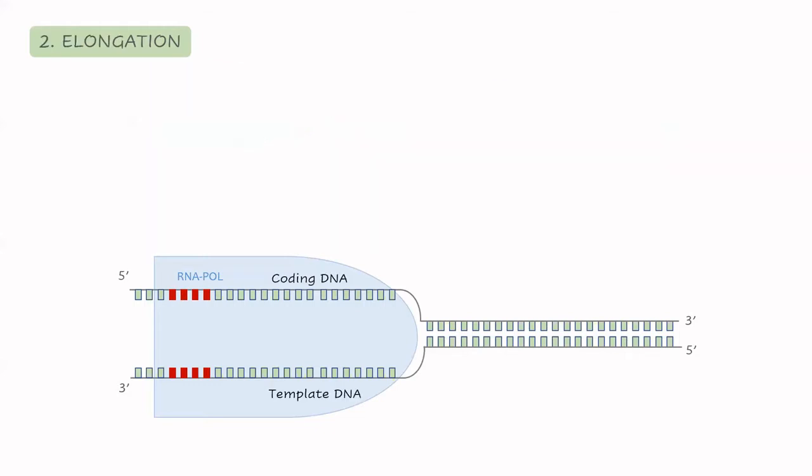Here the elongation phase starts. In the DNA we have two strands. One of them is what we call the coding DNA, which contains all the necessary information to synthesize the protein. And then the second one is what we call the template DNA, which is the one that the RNA polymerase is going to use to create the RNA sequence.